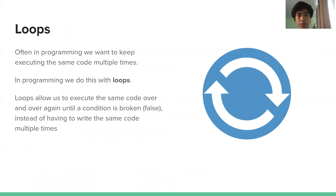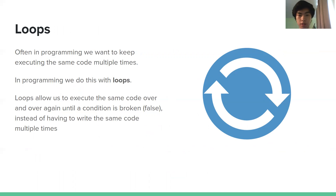Now we'll go over the new stuff today, which is loops. Often in programming, we want to keep executing the same block of code over and over again. Loops do this — we can execute the same code over and over as long as a condition is true, or until a condition becomes false. That saves us having to write the same code over and over again.